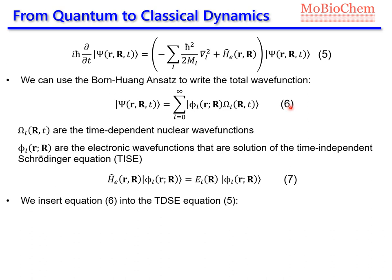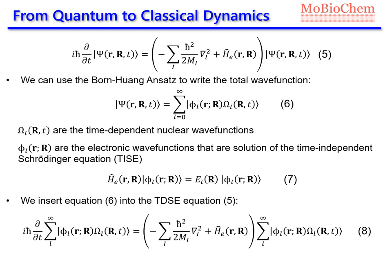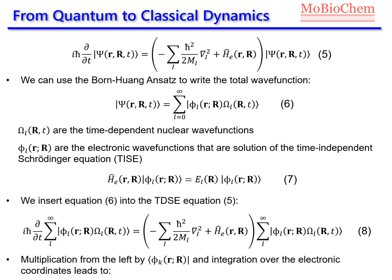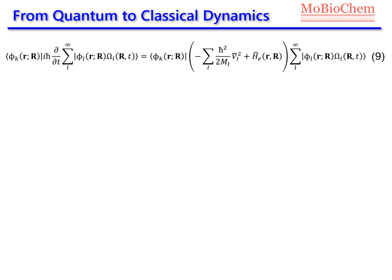We insert equation number 6 into the time-dependent Schrödinger equation, equation number 5, and get the following equation. Now we are going to multiply from the left by the electronic wave function of electronic state k and then integrate over the electronic coordinates. After doing that, equation 8 leads to equation number 9, where we are multiplying on the left by the electronic wave function k.